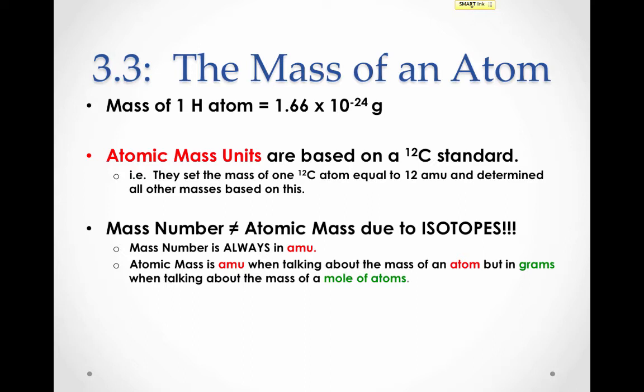If we want to talk about atomic mass, the atomic mass is going to be a weighted average of all of the isotopes of the element. We can talk about this in terms of AMUs when we're talking about a single atom, or when we're talking about a mole of atoms we can use grams. So while mass number is always in AMUs, atomic mass can be in either AMUs or in grams. In this video we'll use AMUs since we're looking from the perspective of a single atom, but from here on out we'll generally talk about it in grams.